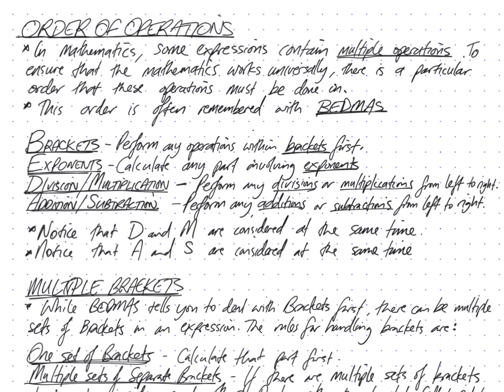In maths, some expressions contain multiple operations, especially at a high level. To ensure that the maths works everywhere the same for everyone — we call mathematics the universal language — there must be a particular order that these operations are done in.